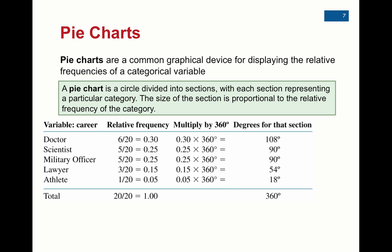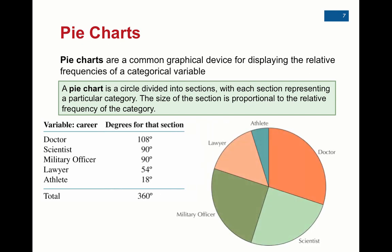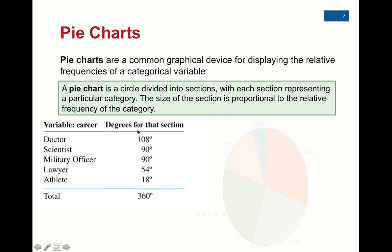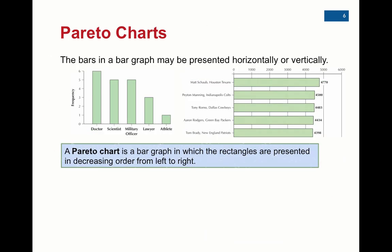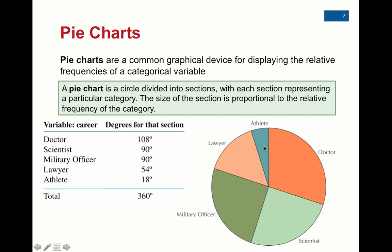Pie charts are another common thing we've seen in newspapers and websites. Now, I'll skip all the math involved in figuring out the degrees for each section — don't worry about that, we're not going to have to do that. We're going to use Microsoft Excel to help us create pie charts. All we'll need is the relative frequency or even the frequency table, and from there we can copy and paste that to create a pie chart. Before we had the bar graph, or we can have a pie chart which shows the same information — doctor is by far the most popular and athlete is the least popular.